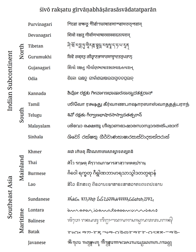Brahmic scripts descended from the Brahmi script. Brahmi is clearly attested from the 3rd century BC during the reign of Ashoka, who used the script for imperial edicts, but there are some claims of earlier epigraphy found on pottery in South India and Sri Lanka.